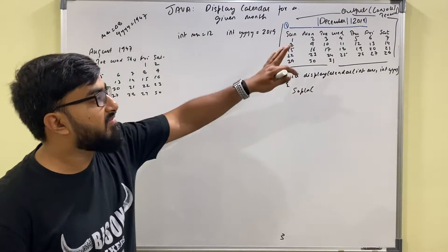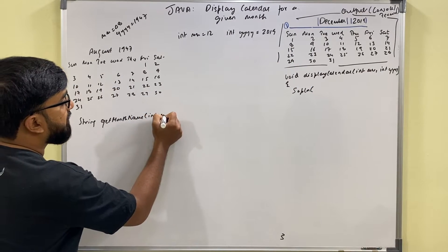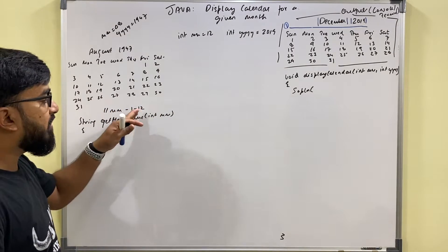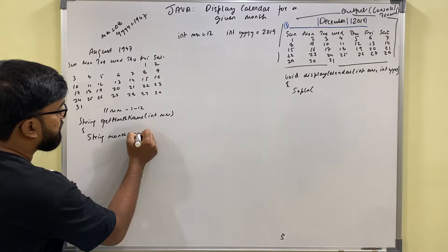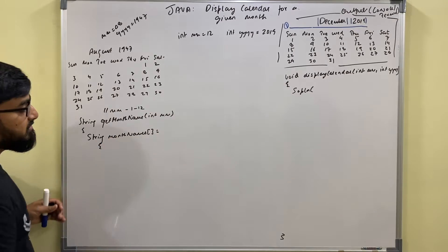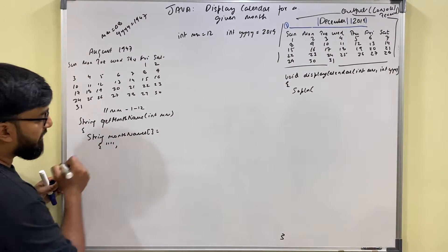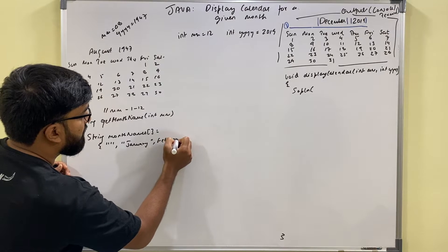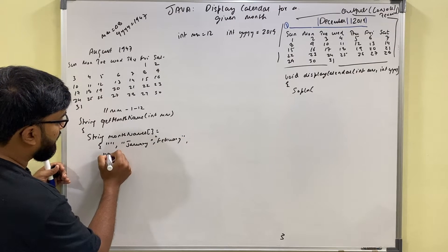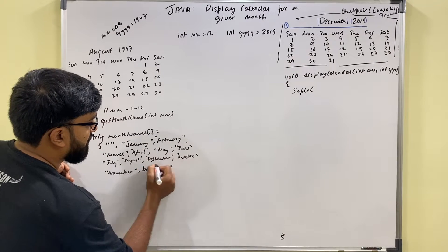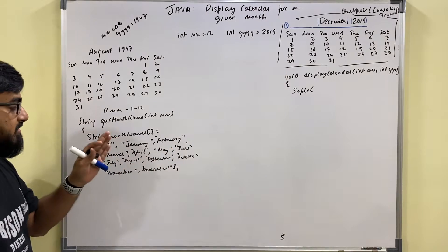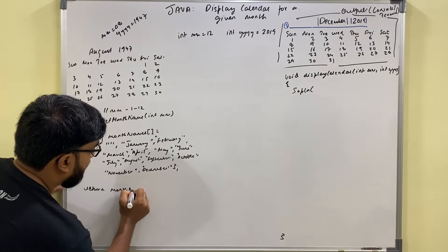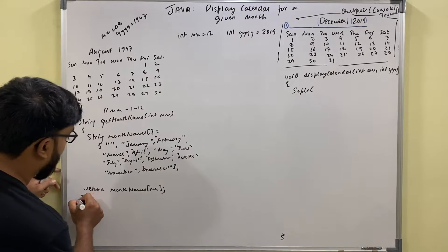I'll write a helper function where month is between 1 to 12. I'll take a string array monthNames — location 0 is empty, location 1 is January, location 2 is February, location 3 is March, and so on through November and December. The array has 13 locations with indices 0 to 12, and I return monthNames[mm].